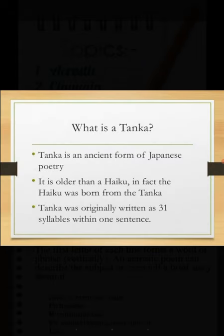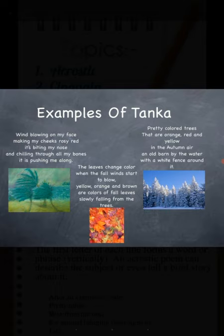Moving on to tanka — a Japanese poem of five lines and 31 syllables, giving a complete picture of an event or mood. This form was developed by Kakinomoto no Hitomaro. Examples: Wind blowing on my face, making my cheeks rosy red, it's biting my nose and chilling through all my bones, it is pushing me along. The leaves change color in the fall. Wind starts to blow. Yellow, orange, and brown are colors of fall leaves, slowly falling from the trees.